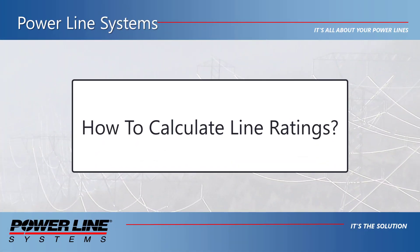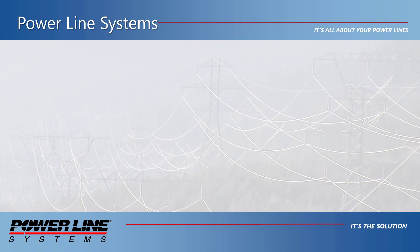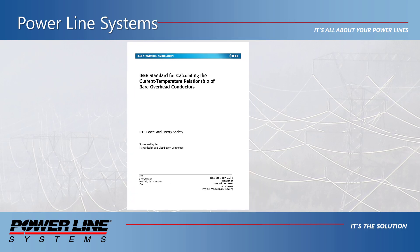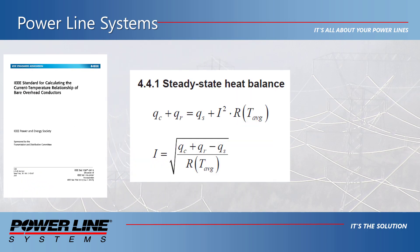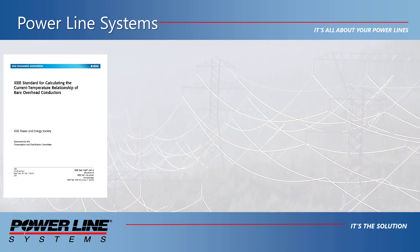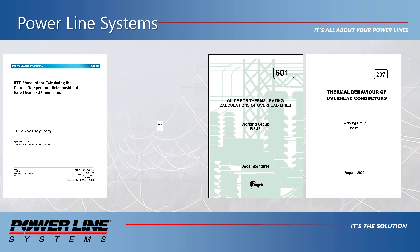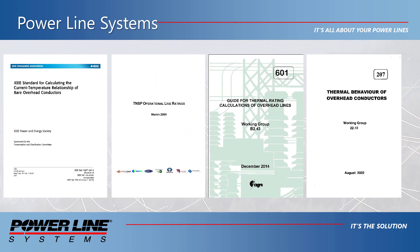So how do we calculate these ambient adjusted or seasonal ratings for FERC Order 881 in PLSCAD? Currently, IEEE Standard 738 is used by many in the US, which is a series of heat balance equations that relate conductor temperature to electrical current. Other options available in PLSCAD are Seagray 207 and 601, and TNSP 2009.